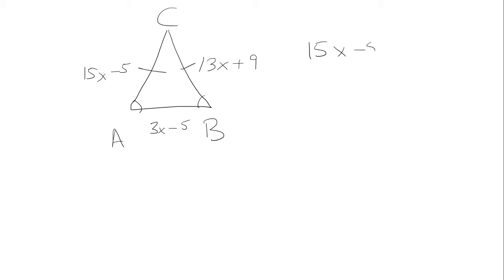So we'll get 2x equals 14, and x equals 7. Now we're going to find the perimeter.